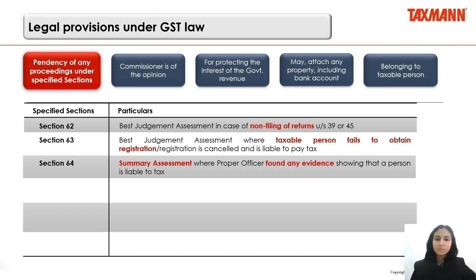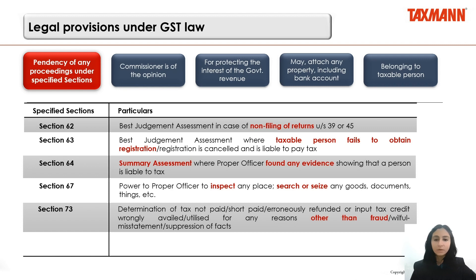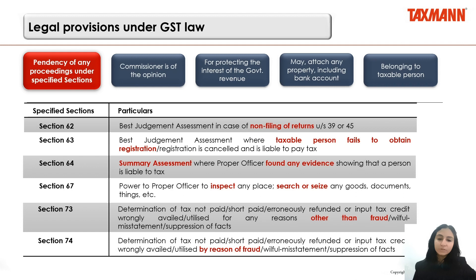Section 64: where the proper officer finds evidence showing a person is liable to pay tax and forms an opinion that the interest of the revenue is at harm, the officer can proceed with summary assessment. Section 67 talks about inspection, search, and seizure. Section 73 talks about determination of tax in cases where the taxpayer is unable to pay tax due to unintentional reasons. Section 74 talks about determination of tax where tax was not paid due to fraud.